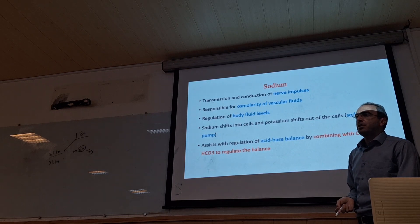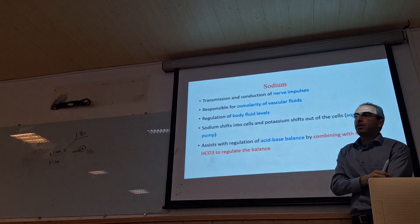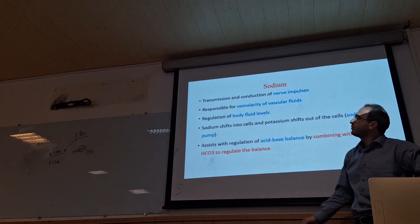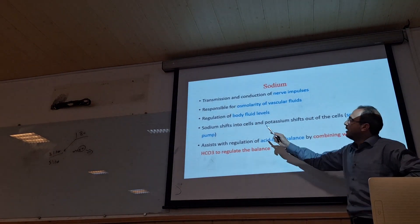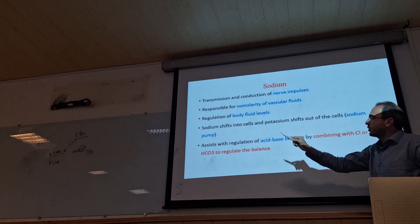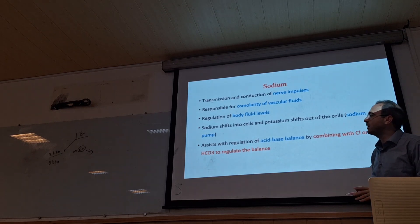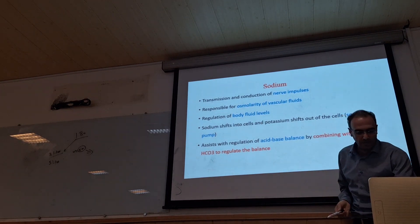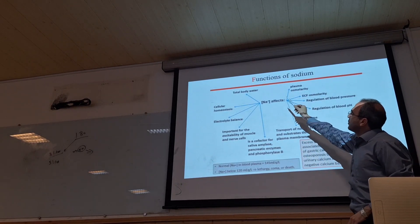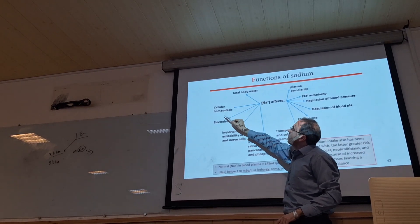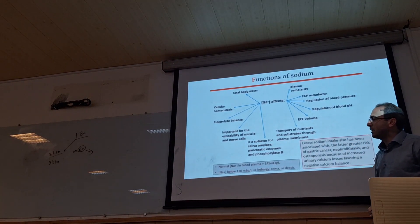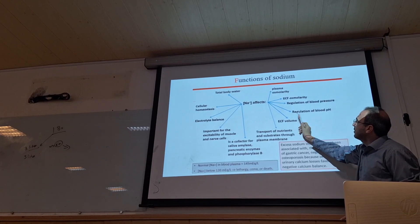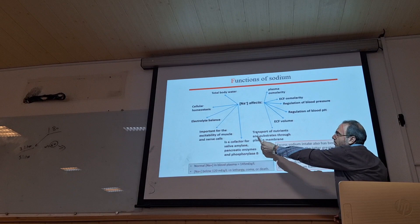What are the functions of sodium in our body? It is important in transmission and conduction of nerve impulses, in osmolality of fluid, and regulation of body fluid levels. Sodium is transferred via the sodium-potassium pump between inside and outside of muscle. It is important in regulation of acid-base balance together with chloride and bicarbonate, in maintaining total body water, electrolyte balance, excitability of muscle and nerve cells, plasma osmolarity, and regulation of blood pressure.